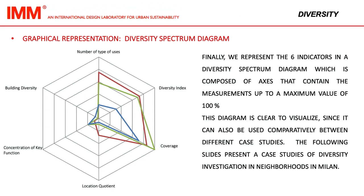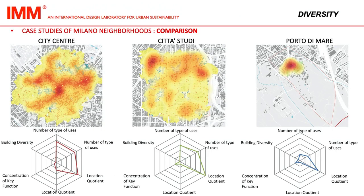Finally, we represent the six indicators in a diversity spectrum diagram composed of axes containing measurements up to a maximum value of 100. This diagram is clear to visualize and can also be used comparatively between different case studies. The following slides present a case study of diversity investigation in neighborhoods in Milan: the city center, Cittastudi, and Porto di Mare.